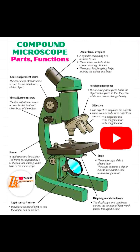We also have other parts of this microscope and we can state them and give their functions. We have what we call an eyepiece. An eyepiece magnifies the image formed by the objective lens and it usually magnifies it times 10.